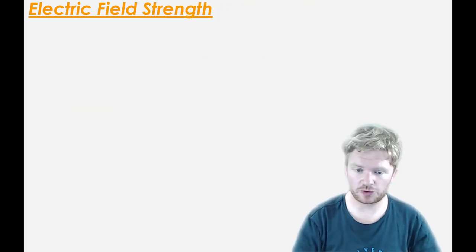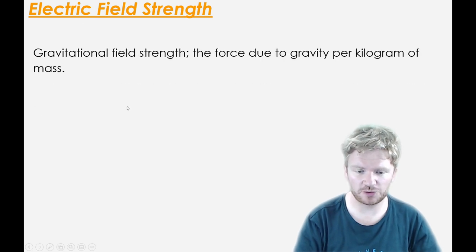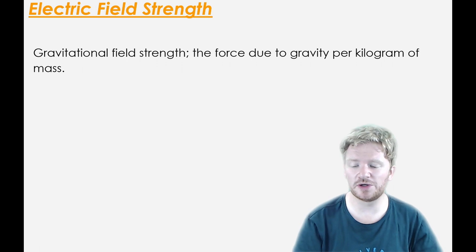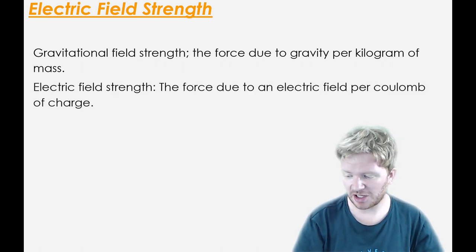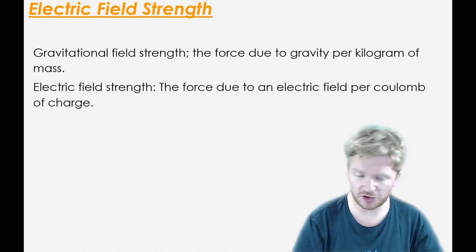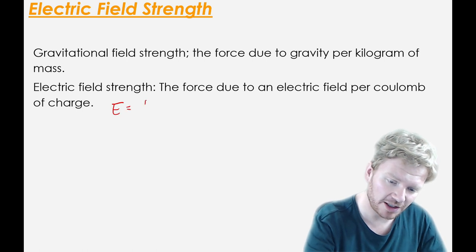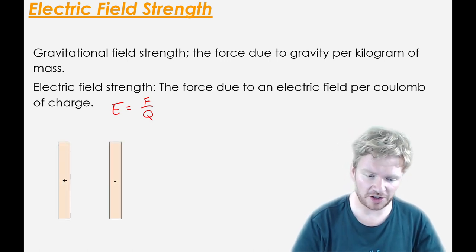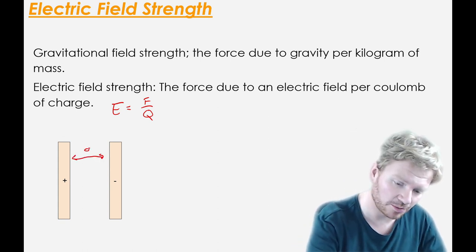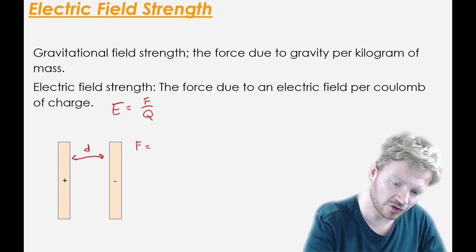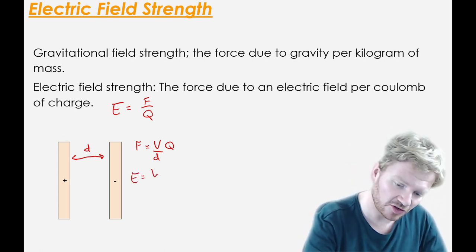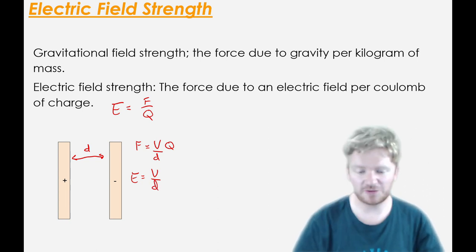Let's now think about electric field strength. We can define gravitational field strength as the force due to gravity per kilogram of mass. Similarly, electric field strength is the force due to an electric field per coulomb of charge. It has the symbol E, and E equals the force on an object divided by its charge. For two parallel plates with separation d, the electric field strength is simply the voltage divided by the distance between them.